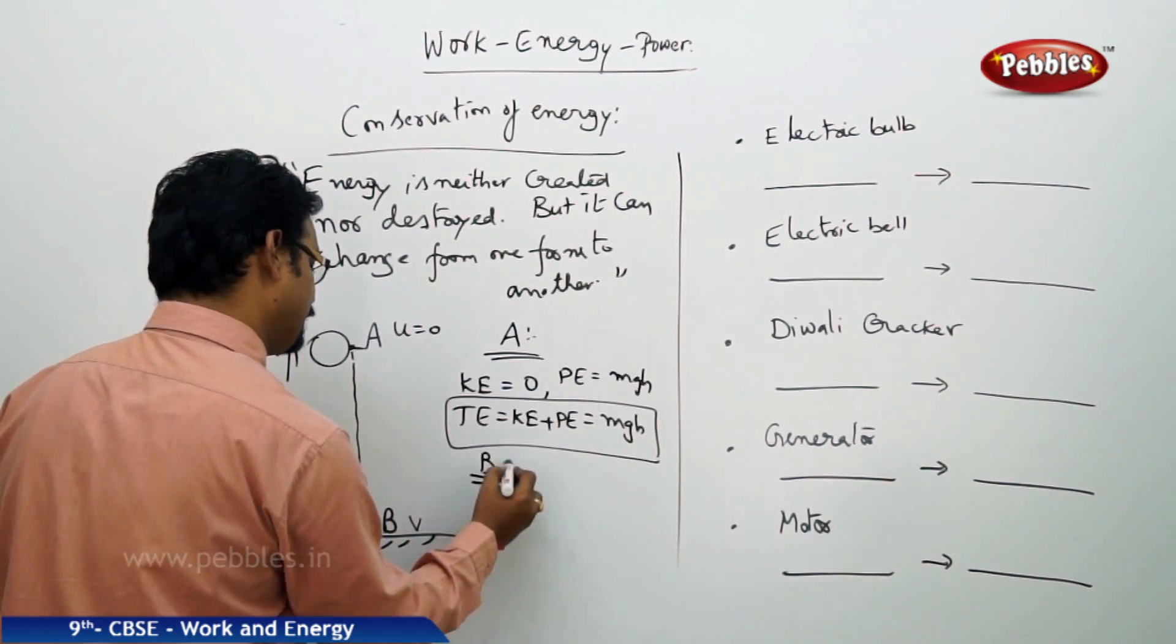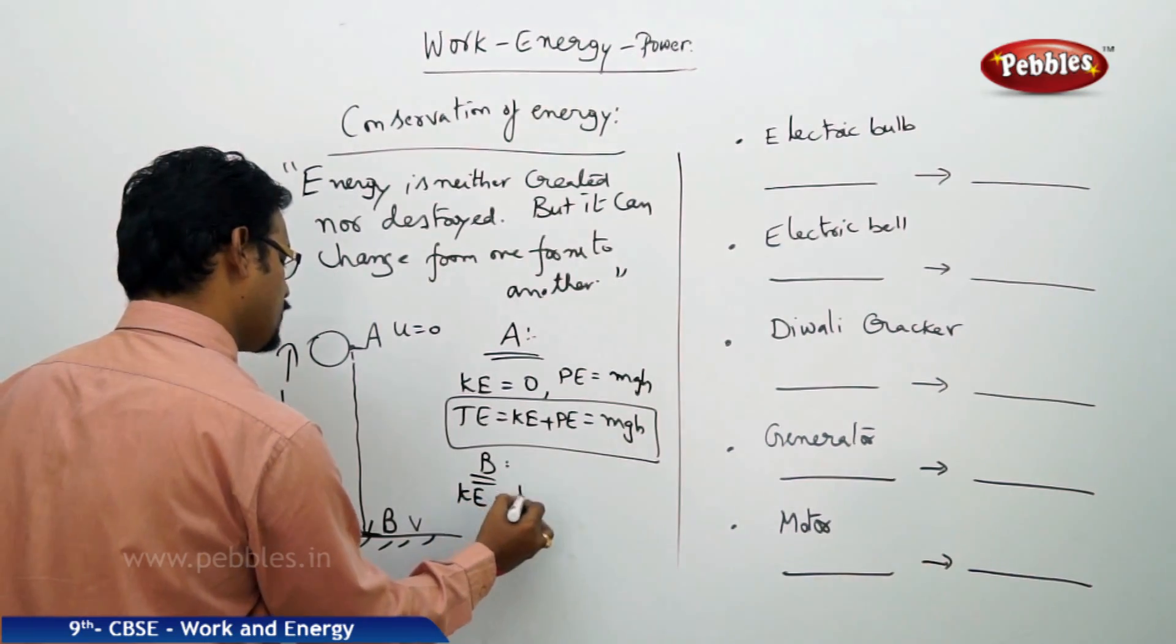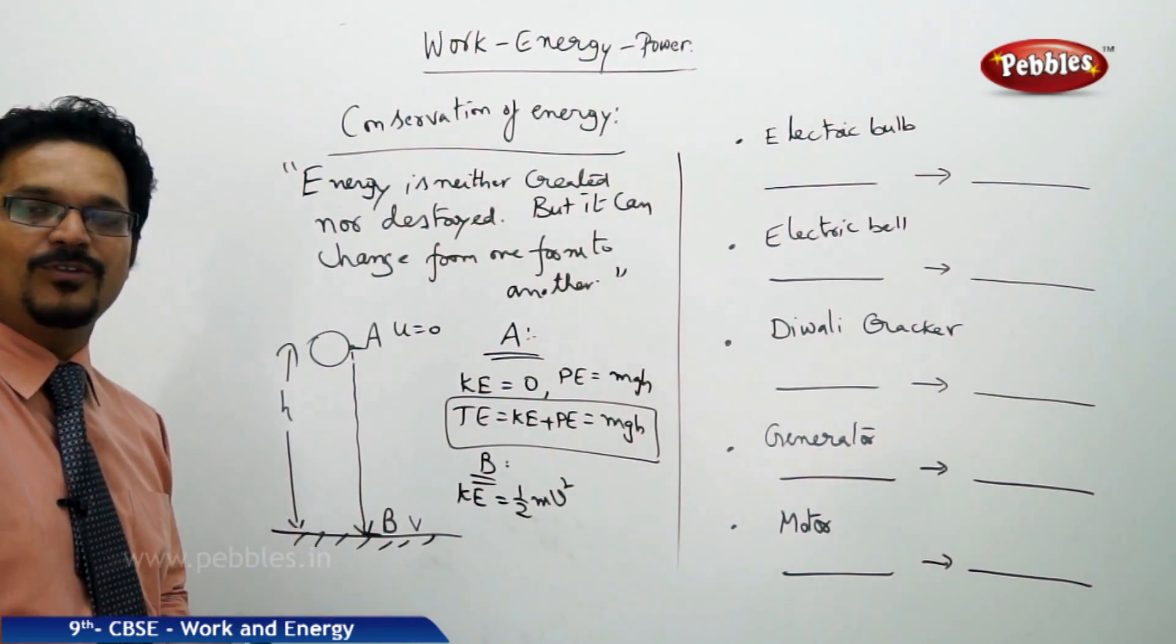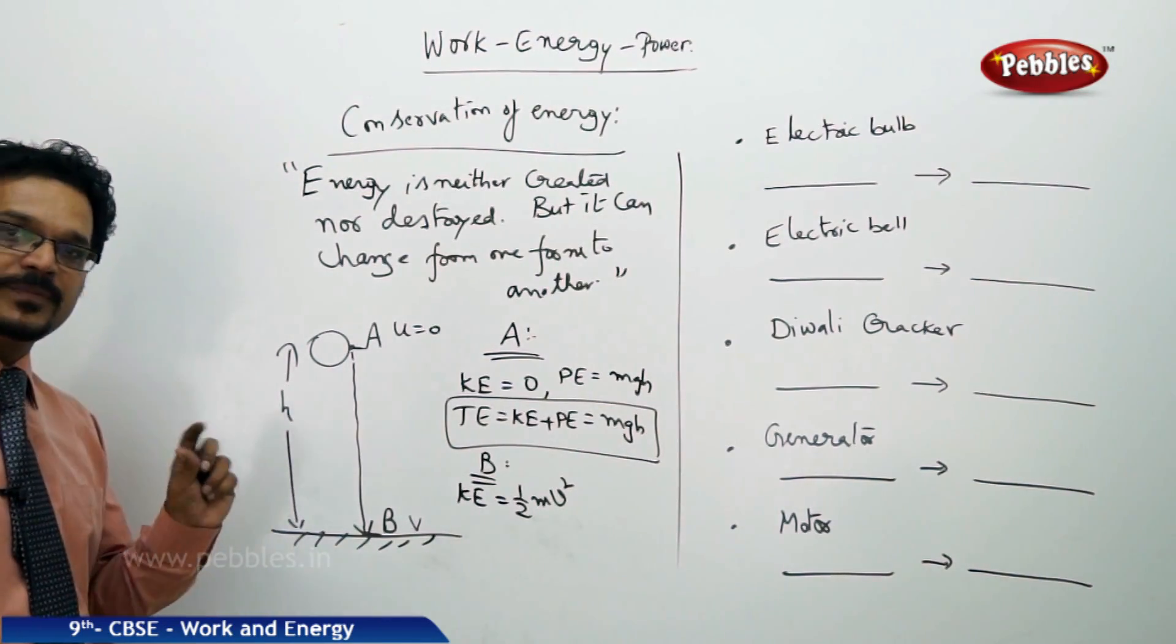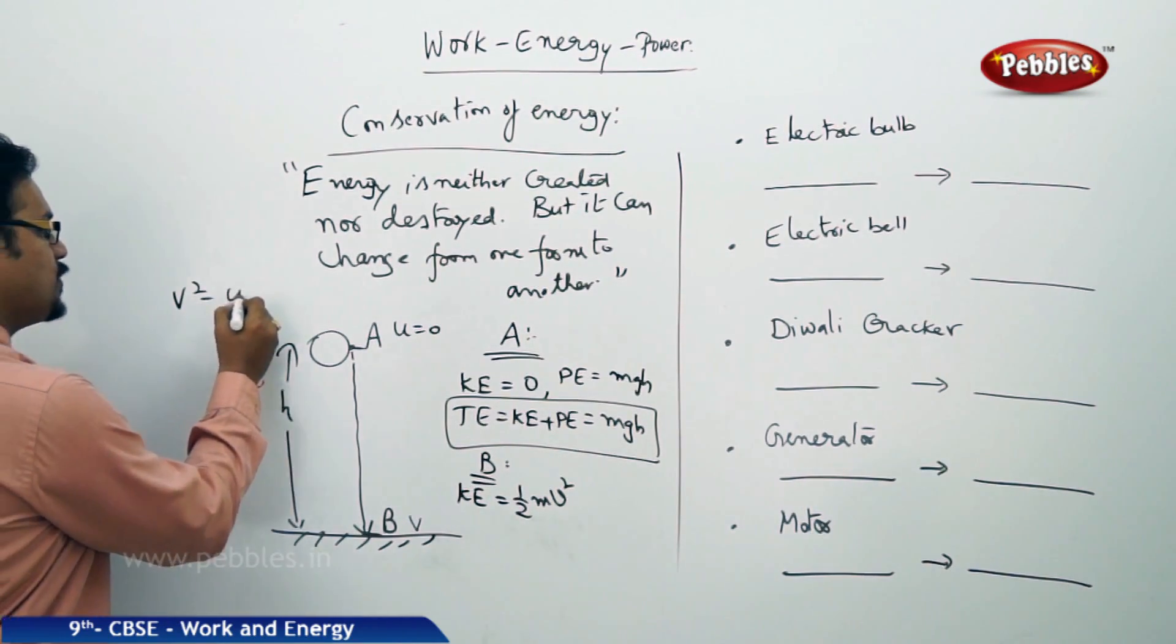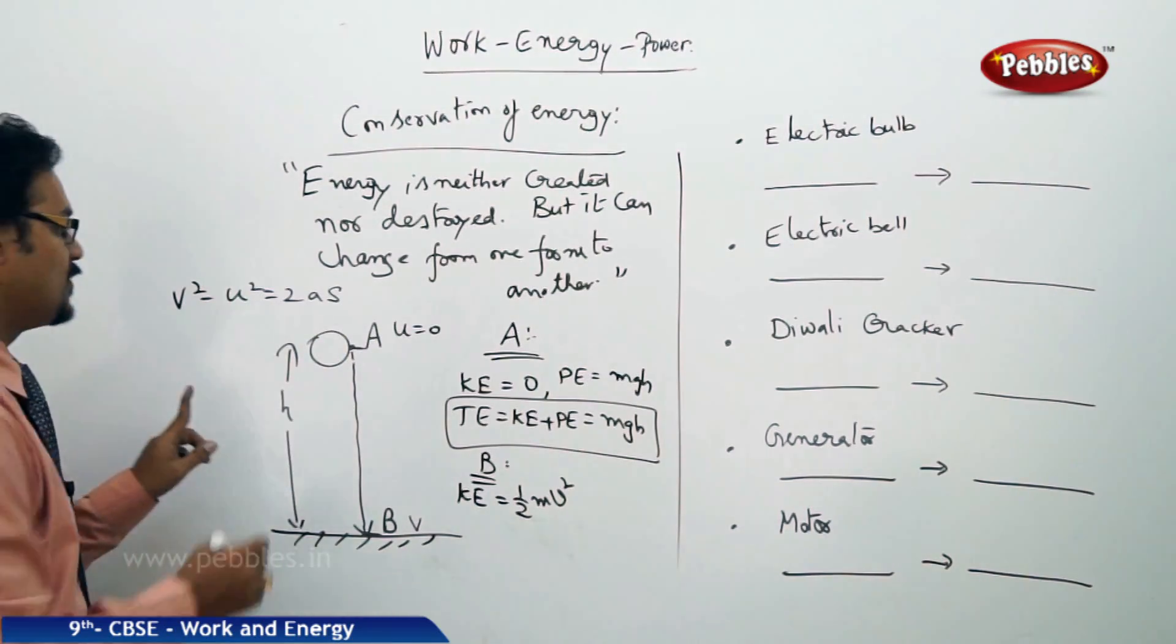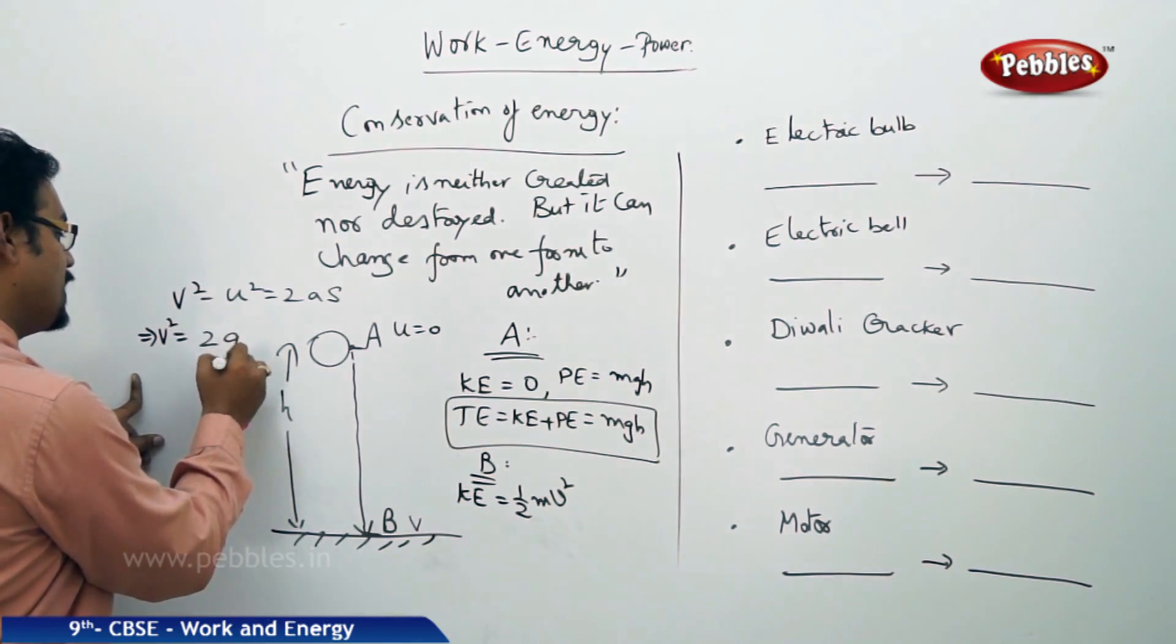Total energy at point A. Now coming to point B, the kinetic energy KE equals ½mV², because V is the final velocity. But wait, what is the V value? We should know. So to find V value, we do a little calculation. We know that V² - U² = 2as.